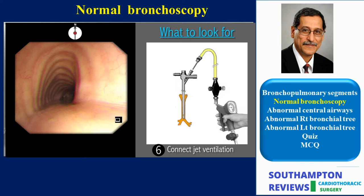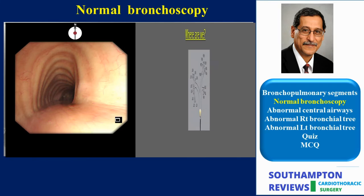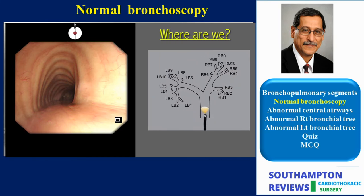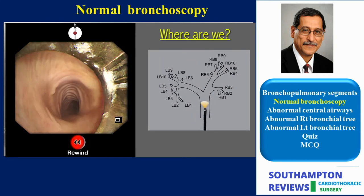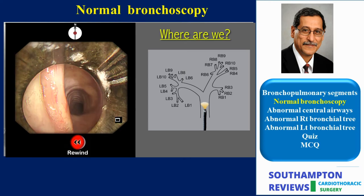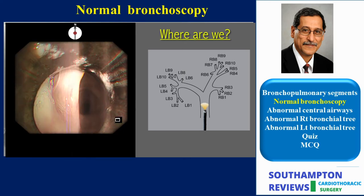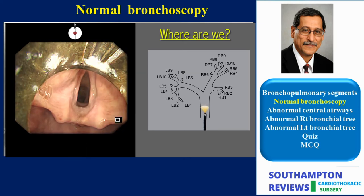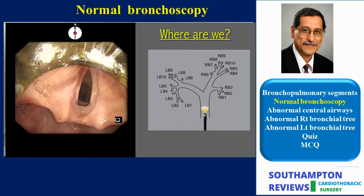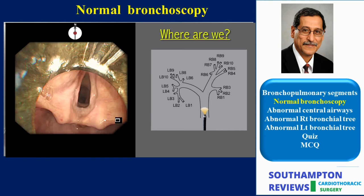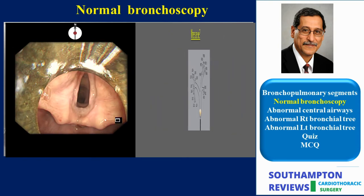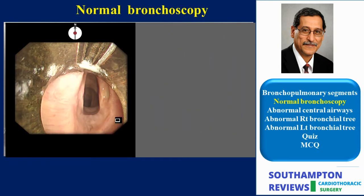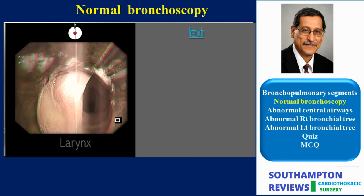Once in the trachea, the Venturi device is connected to the rigid scope to establish ventilation. The operator can now relax and pay attention to introducing the flexible scope through the rigid one to examine the central airways. Once the vocal cords are passed, we enter into the larynx.